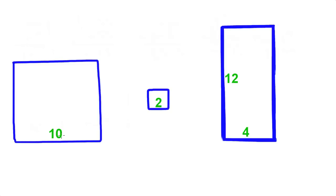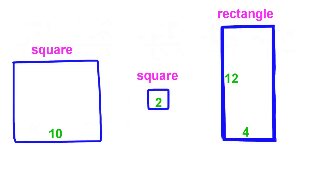Right here we have addition with perimeters. Right here we have two squares and a rectangle.